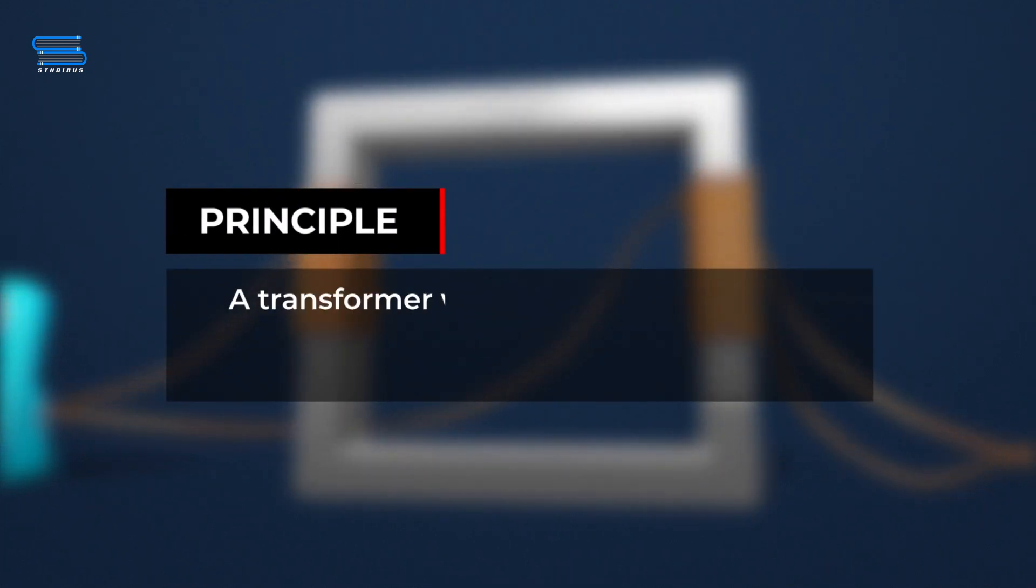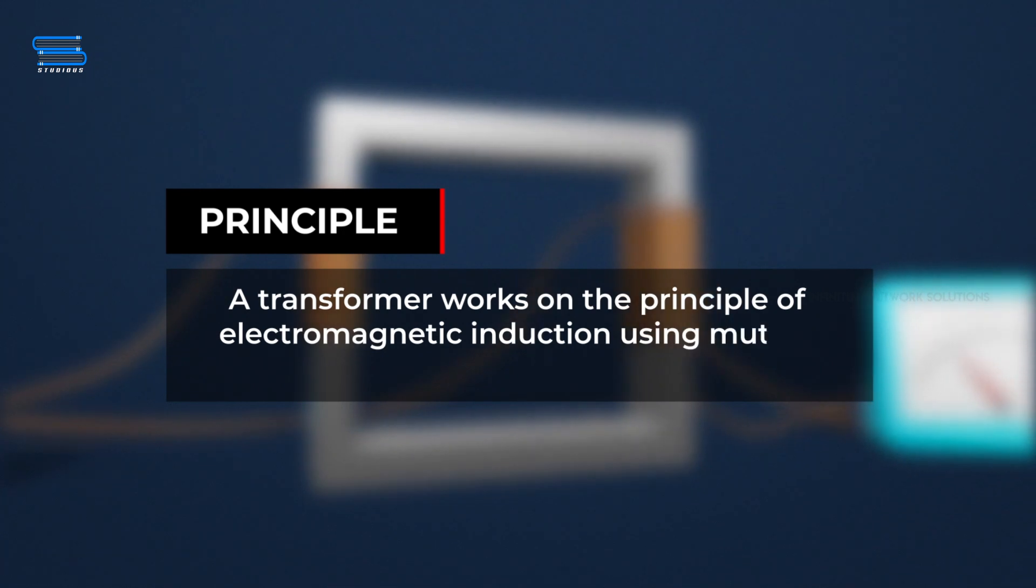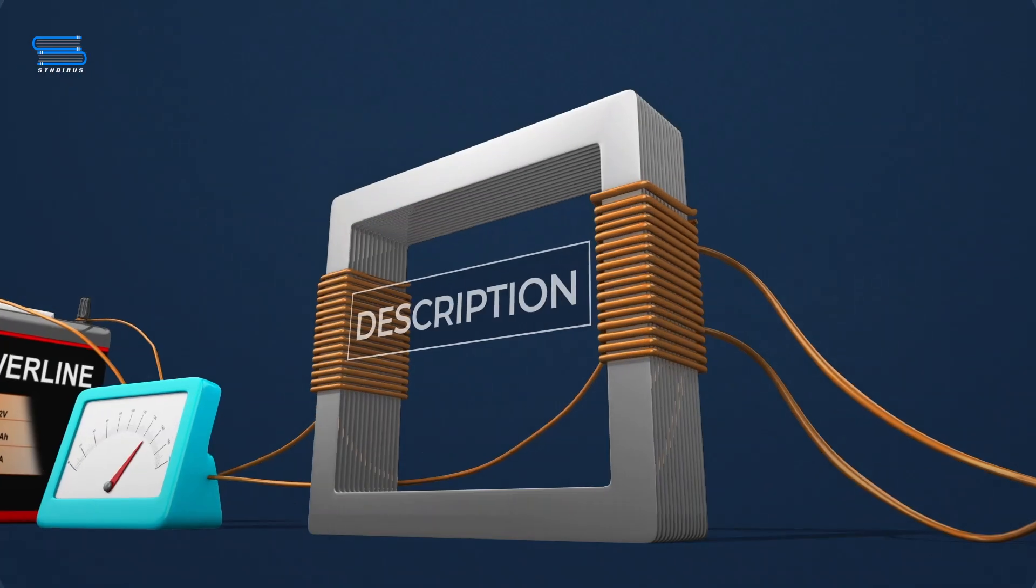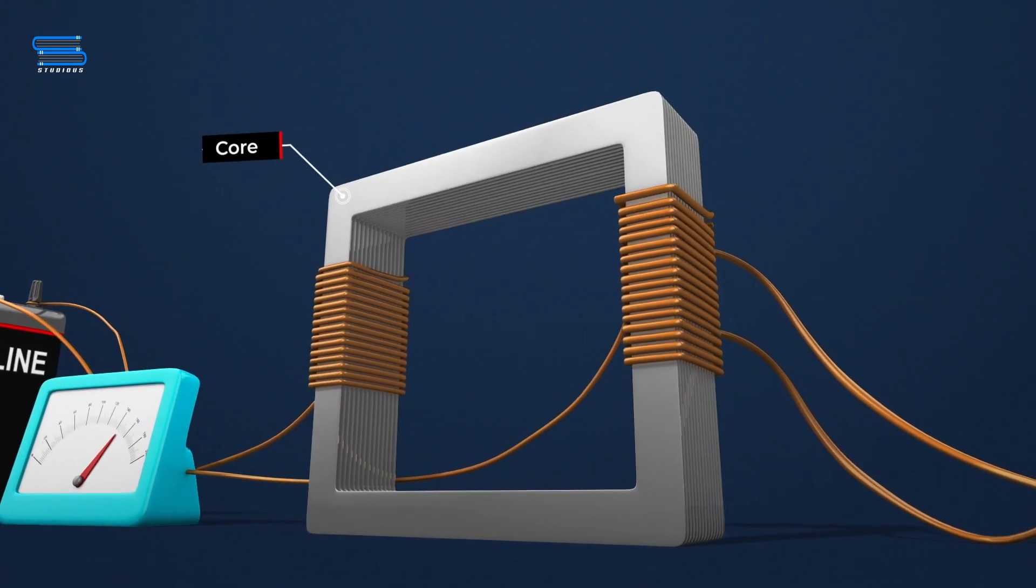Principle: A transformer works on the principle of electromagnetic induction using mutual induction of two coils. Description: The essential parts of a transformer are one core,